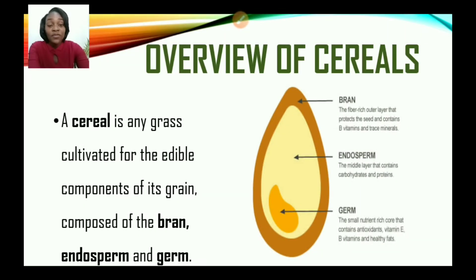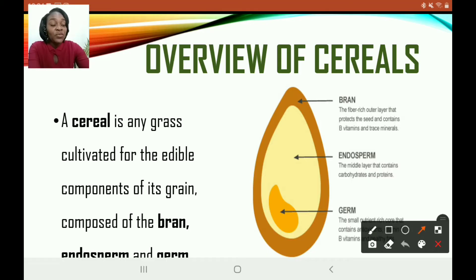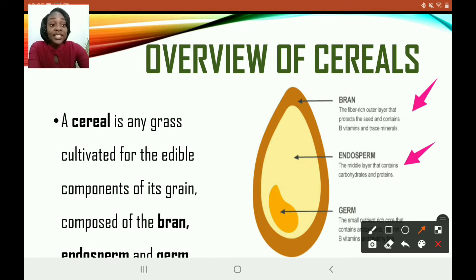Now let us look at an overview of cereals. A cereal is any grass cultivated for the edible components of its grain, composed of bran, endosperm, and germ. As you can see on this side of your screen, this is a cereal grain — a general format for all cereal grains. We have first the bran, which is the rich outer layer that protects the seed and contains B vitamins and trace minerals. We also have the endosperm, which is the middle section that contains carbohydrates and proteins.